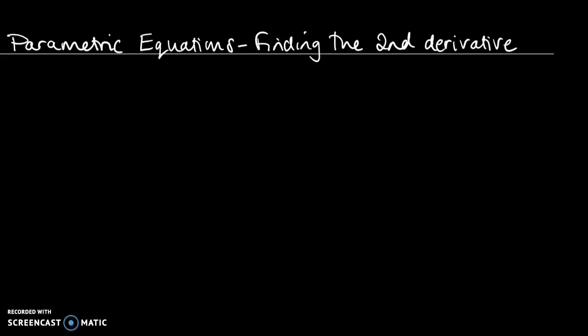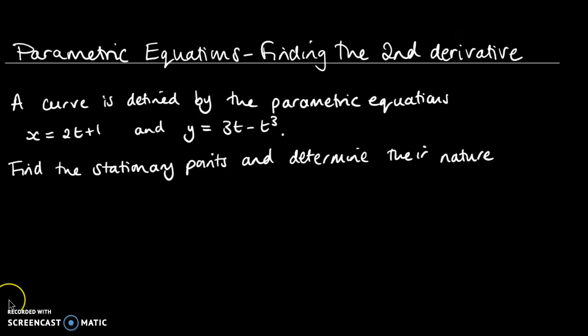In this video we are looking at parametric equations, specifically finding the second derivative. The previous video covered how to find the first derivative for parametric equations. Now we're looking for the second derivative for things like determining the nature of stationary points. We have a question about a curve defined by parametric equations, and we're going to find the stationary points and determine their nature.